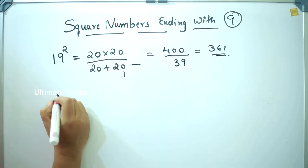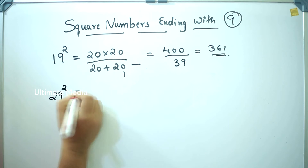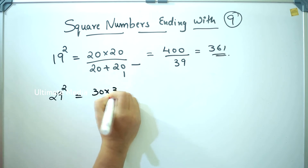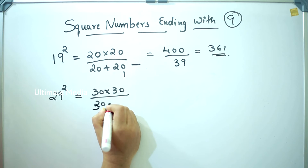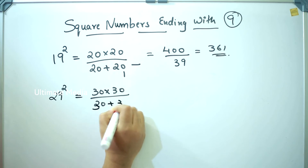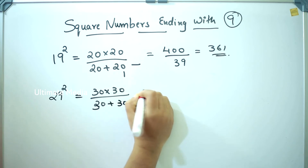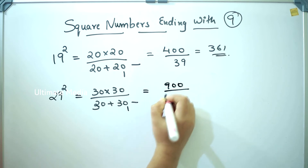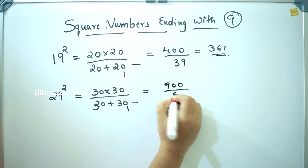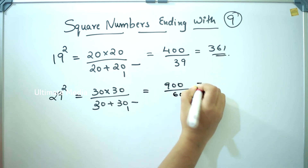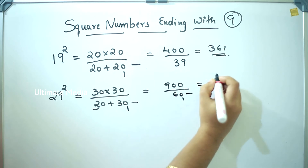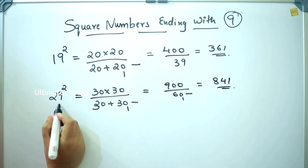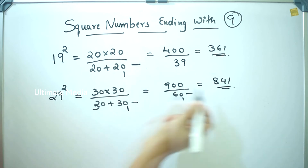Next, 29 square. 30 into 30, by 30 plus 30, minus 1. 900 by 60 minus 1 = 59. So the answer is 841.